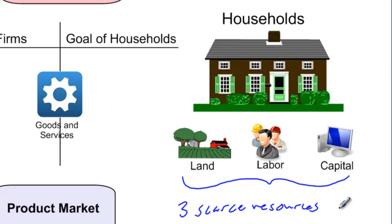Labor is simply human resources — any input into the production of a good or service that involves workers, from factory workers to highly skilled and educated individuals. Capital is the technology used to produce goods. For example, the capital resource I'm using to produce this video is a computer. Capital resources also include factory equipment and tractors for farmers — any technology used in production.